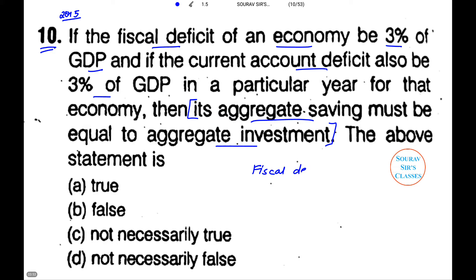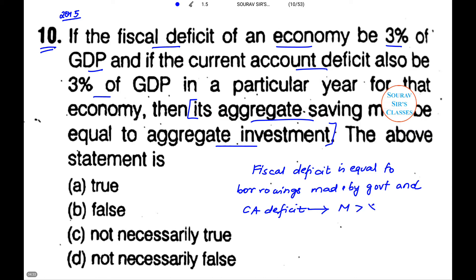Let us evaluate the given certain statements and then we will say which answer option will be correct. Now fiscal deficit is equal to borrowings made by the government.